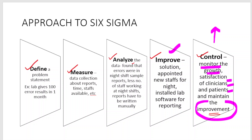If you have appointed new staff for the night shifts and installed laboratory software for the reporting process, there will definitely be an improvement in the quality of the results. That is what achieving Six Sigma means — that is the approach to achieve Six Sigma.